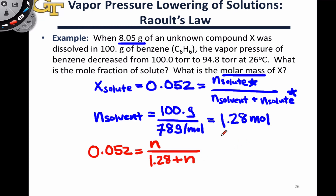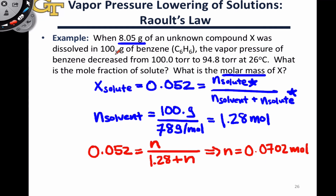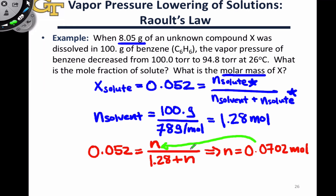If you multiply both sides by 1.28 plus n and do the algebra to isolate n, you'll find that n comes out to 0.0702 moles. I would encourage you to plug this back in for the value of n in the numerator and denominator to make sure that the ratio does indeed come out to 0.052, the mole fraction of solute we found before.